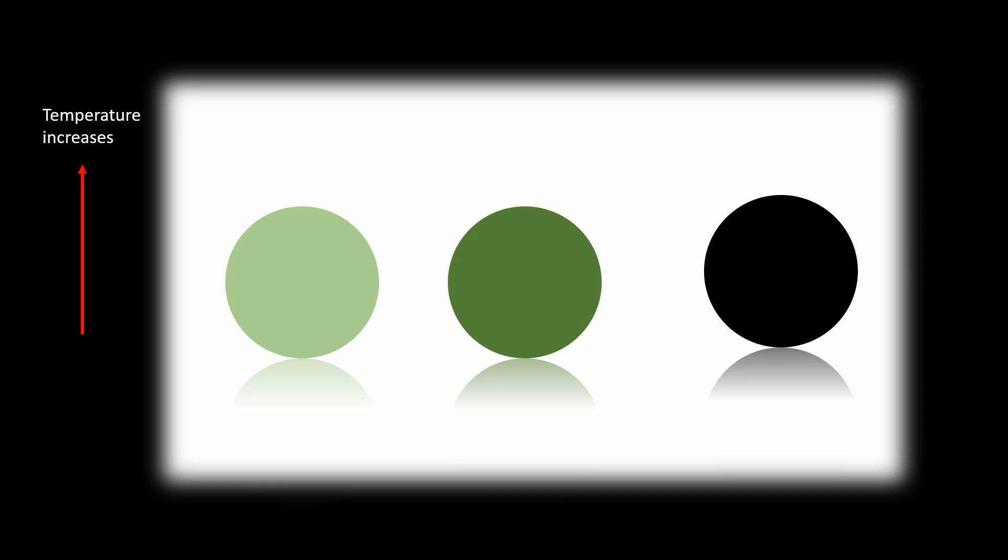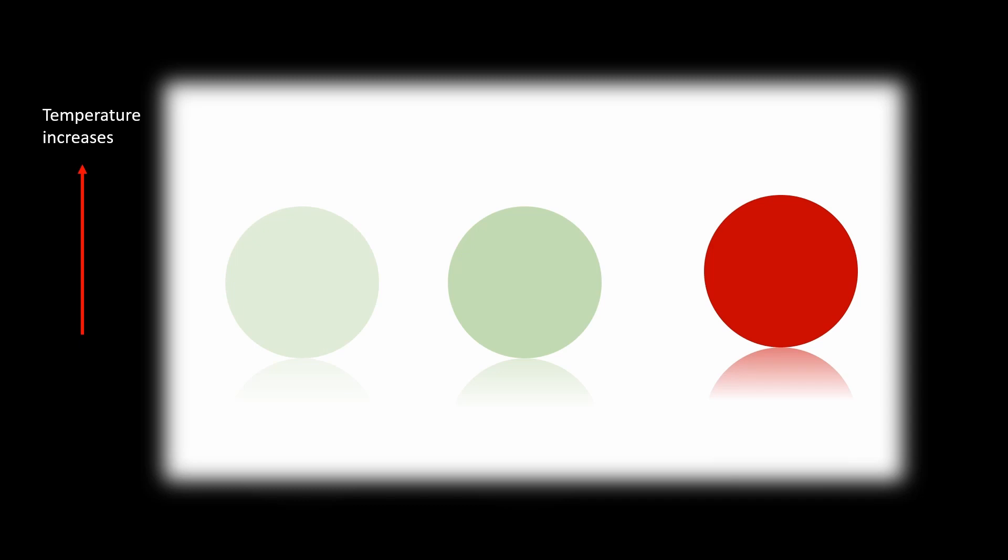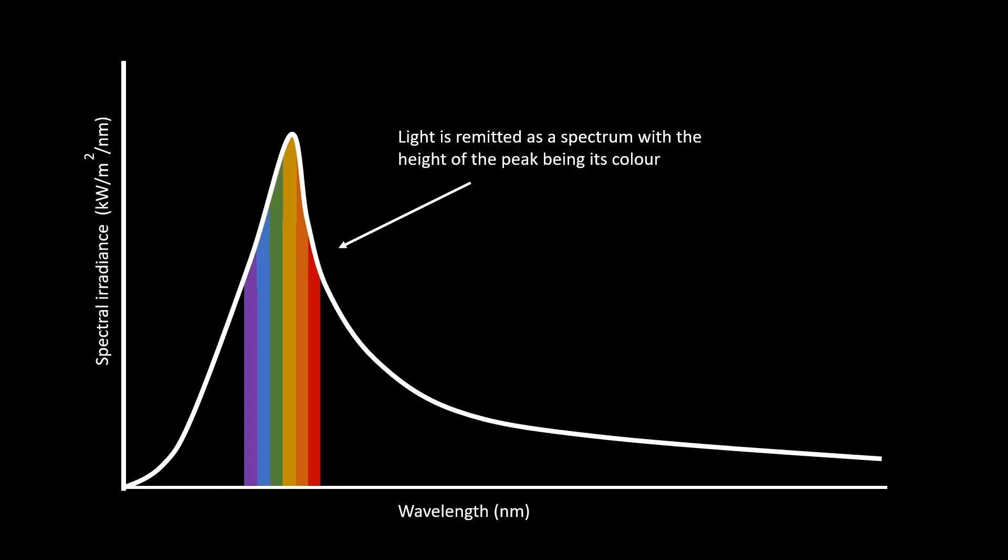Now, as we heat up these objects, the green ones become brighter green, while the black one changes color, gradually shifting towards shorter wavelengths as temperature increases. Keep in mind that the emitted light forms a continuous spectrum, but the wavelength with the most intense radiation or the peak on the spectrum determines the color you see. And this is how a black body exhibits a specific color.